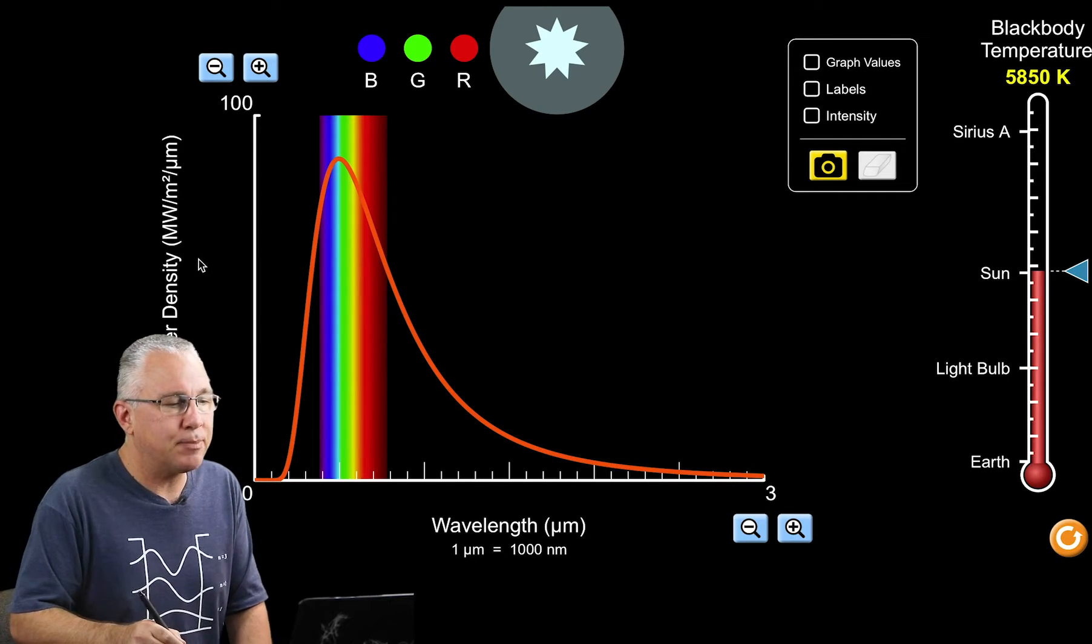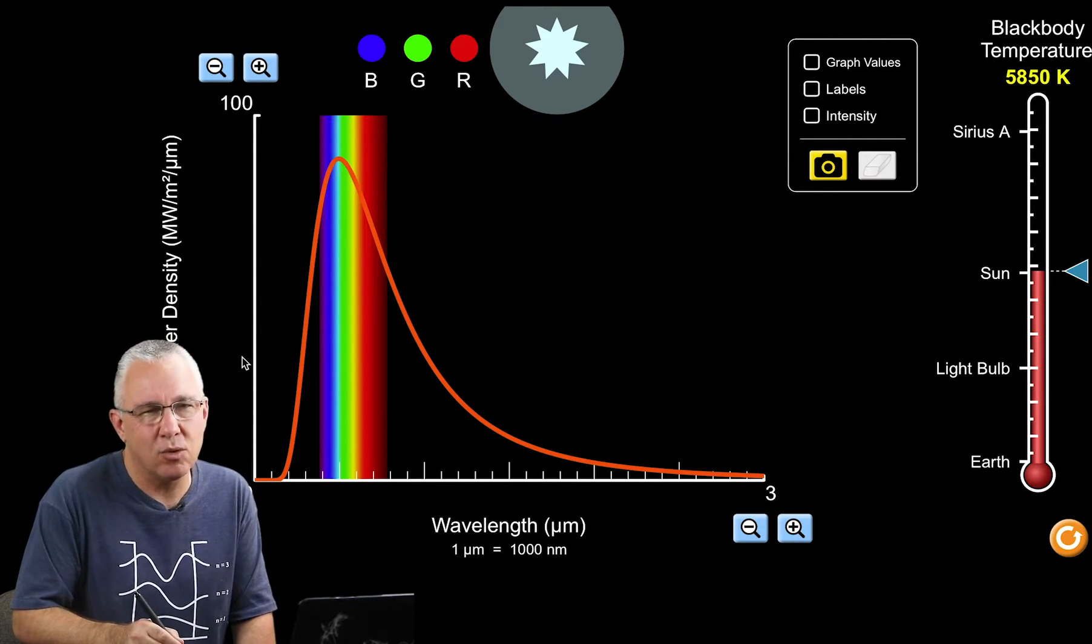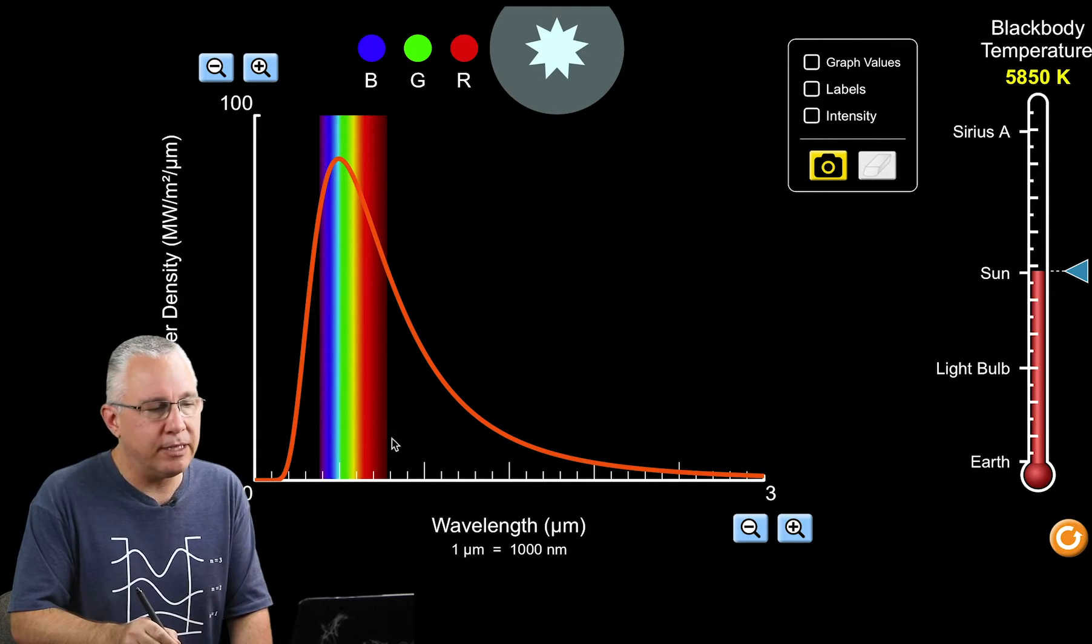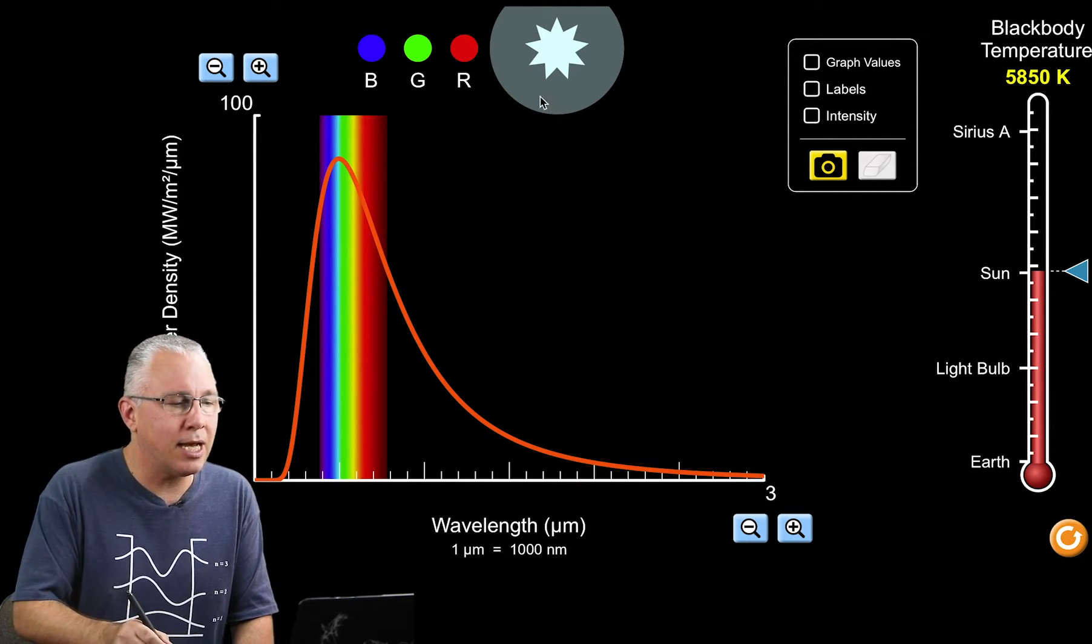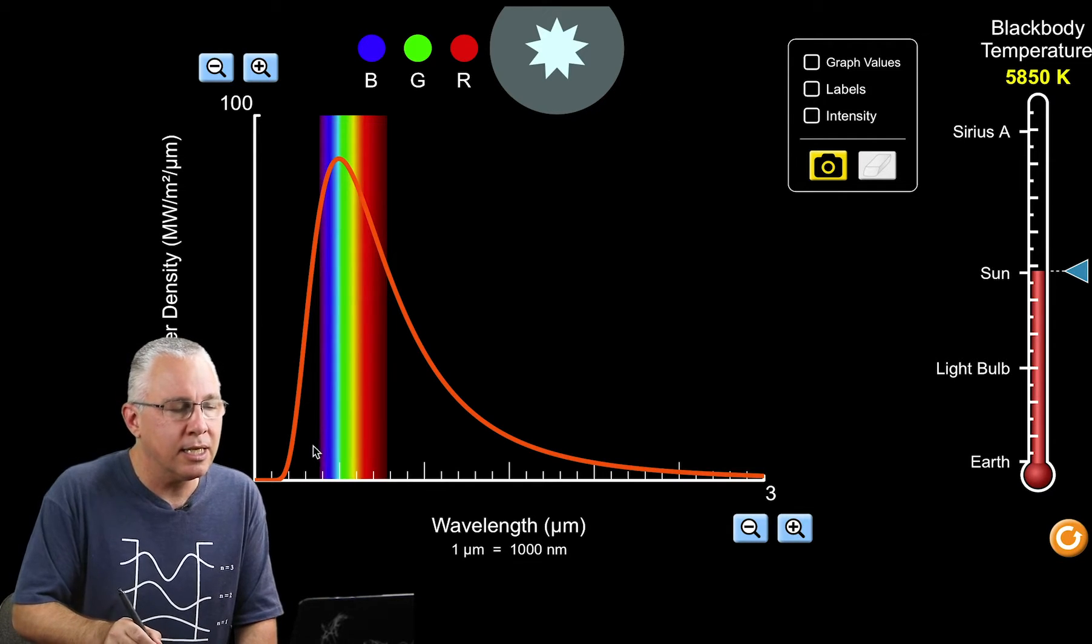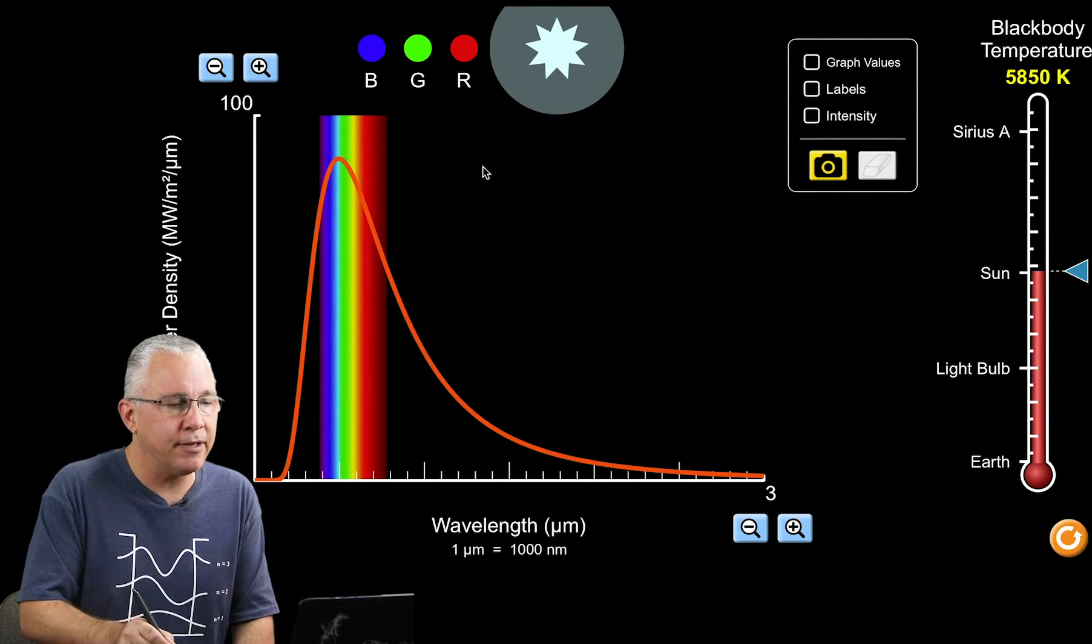On the y-axis we have spectral power density, the intensity for every given wavelength. On the x-axis you see the wavelength. The star we call our sun is giving a very characteristic curve, a black body curve.